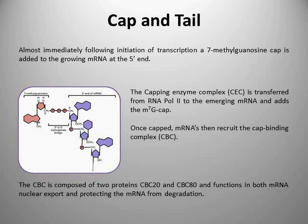The first thing that actually happens to an mRNA, pretty much as it's being transcribed by RNA polymerase 2, is that it's capped at the 5' end of the emerging mRNA molecule. The cap is a very specialised structure — what's known as a 7-methylguanosine cap. This terminology refers to the chemistry of the actual guanosine residue that's been placed on the 5' end of the mRNA. The actual addition of this 7-methylguanosine cap utilises quite an unusual 5' to 5' triphosphate bridge.